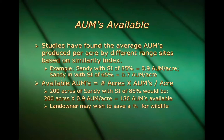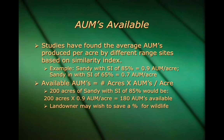The first thing we look at when determining the stocking rate of an area are the animal unit months, or AUMs, that are available. Studies have found the average AUMs produced per acre by different range sites based on their similarity index. For example, a sandy range site with a similarity index of 85% yields 0.9 AUMs per acre; the same sandy site with a similarity index of 65% yields 0.7 AUMs per acre. Our formula to determine the available AUMs is: number of acres times the AUMs per acre.